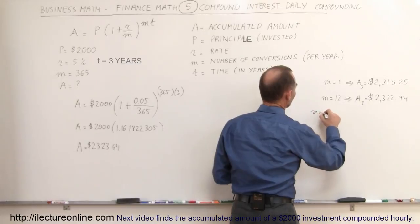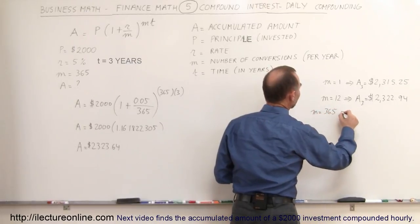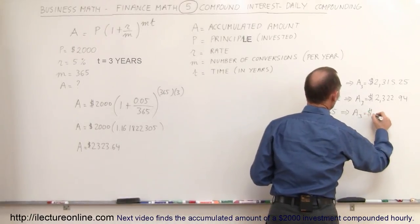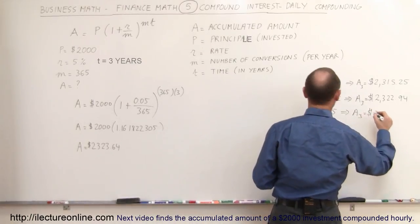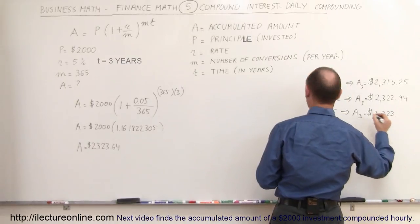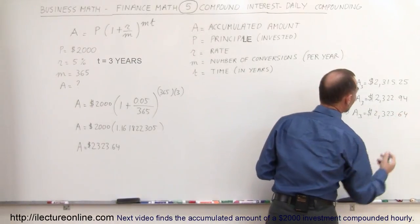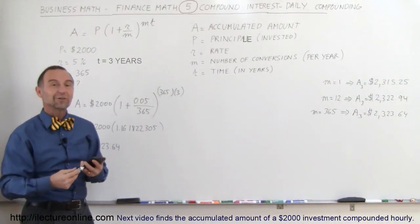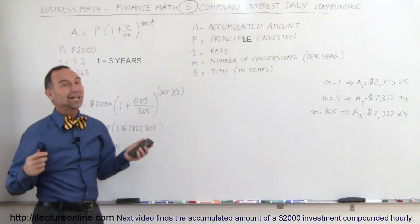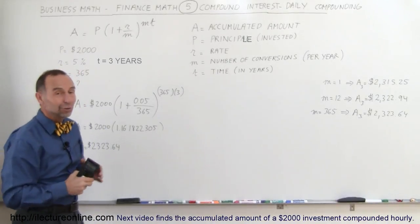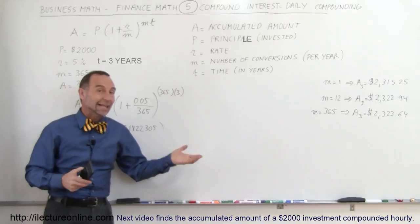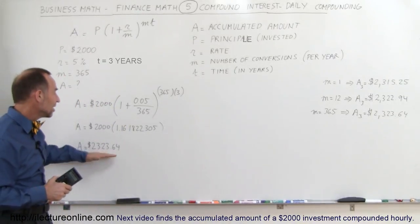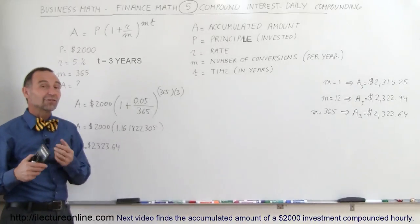So m equals 365, indicating daily compounding. After three years, the amount accumulated would be $2,323.64, which means you only would make an additional 70 cents of interest over three years when you invest $2,000. Really not worth even walking across the block to go to another bank that might offer you daily compounding instead of monthly compounding.